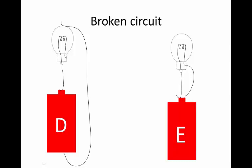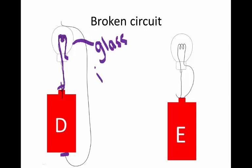There will not be current flowing. Why not? Although we have the first requirement for current to flow — we do have an energy source — we do not have the second requirement: a complete conducting path between the two terminals of the battery. This is the positive terminal, this is the negative terminal. And there we have a conducting path, but it stops there, because the glass of the bulb is an insulator. It is not a conductor.